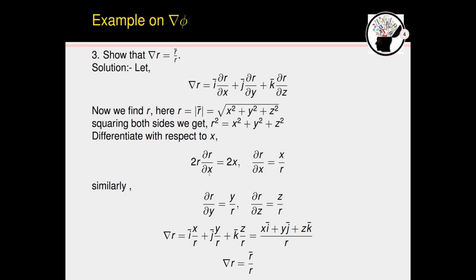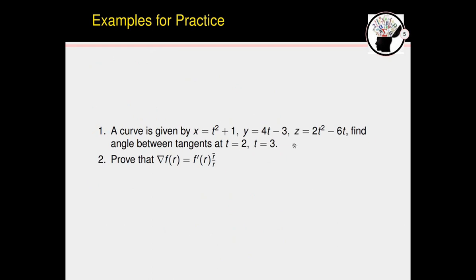Differentiating r² with respect to x: 2r(∂r/∂x) = 2x, so ∂r/∂x = x/r. Similarly, ∂r/∂y = y/r and ∂r/∂z = z/r. Substituting back: grad(r) = i(x/r) + j(y/r) + k(z/r) = (xi + yj + zk)/r. Since xi + yj + zk = r⃗, we get grad(r) = r⃗/r. Practice these two examples at home.